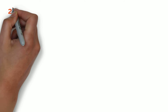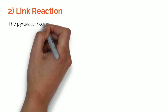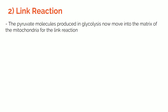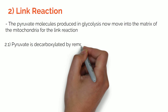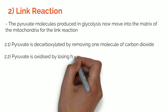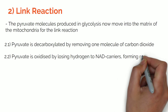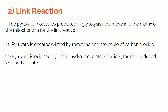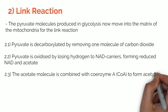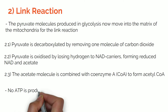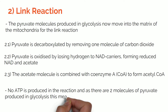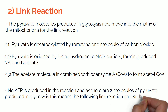Next, the link reaction. The pyruvate molecules produced in glycolysis move into the matrix of the mitochondria. Pyruvate is decarboxylated by removing one molecule of carbon dioxide, and oxidised by losing hydrogen to NAD carriers, forming reduced NAD and acetate. The acetate molecule is combined with coenzyme A, or CoA, to form acetyl CoA. No ATP is produced in the link reaction, and as there are two molecules of pyruvate from glycolysis, the link reaction and Krebs cycle happen twice for every molecule of glucose.